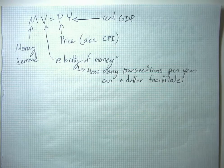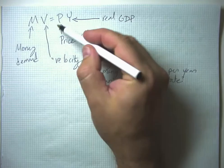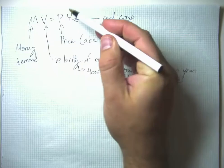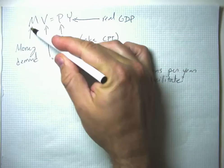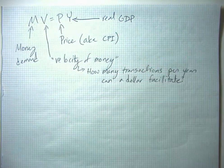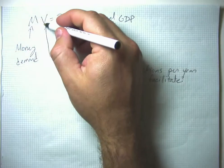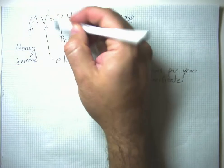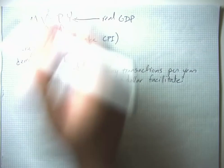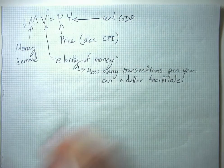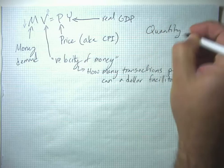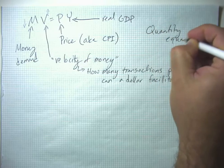So essentially, we're predicting that if the price level goes up, you want to demand more money. If the real volume of transactions goes up, you want to demand more money. If the number of transactions per year that money can accomplish goes up, then to keep everything equal, the amount of money you want to demand would go down. This is known as the quantity equation for money demand.